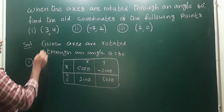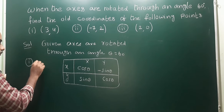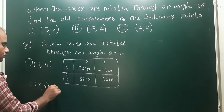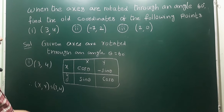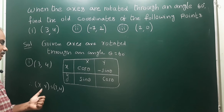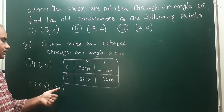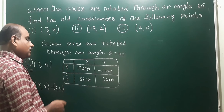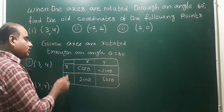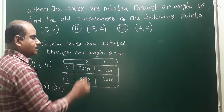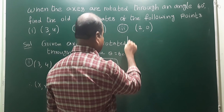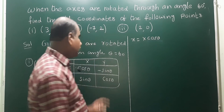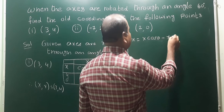First problem — the new coordinates are given. We treat this point as capital X, capital Y. The new coordinates give us capital X and capital Y. To find old coordinates, small x equals X·cos theta plus Y·(minus sin theta), and small y equals X·sin theta plus Y·cos theta.